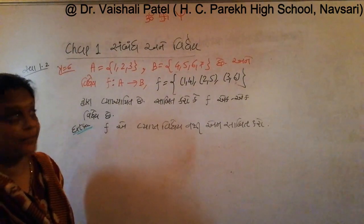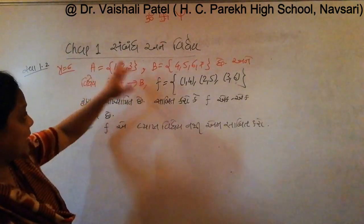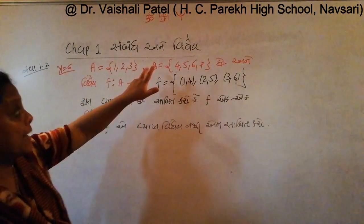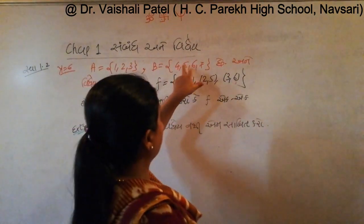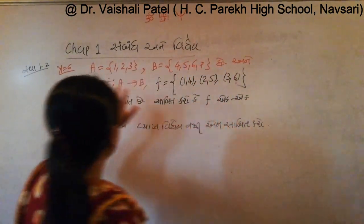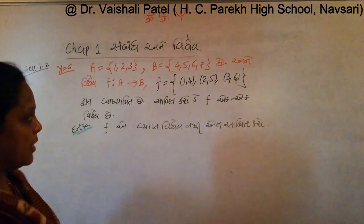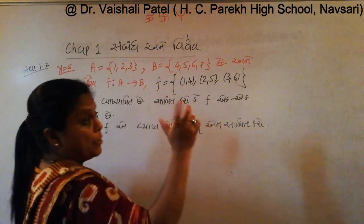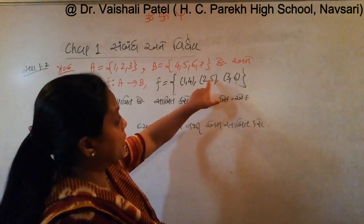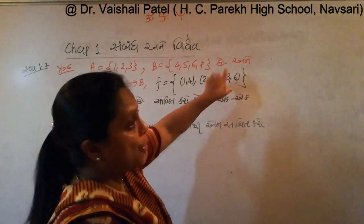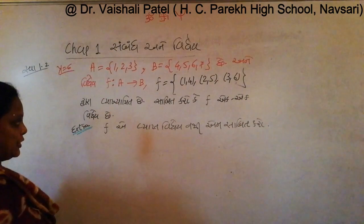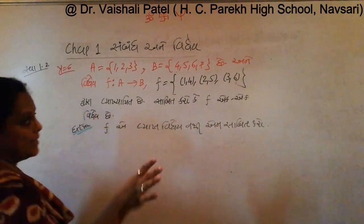Capital A is equal to {1, 2, 3}, capital B is equal to {4, 5, 6, 7}. F from A to B is defined as: f equals {(1,4), (2,5), (3,6)}.